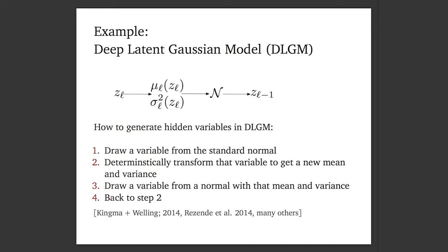What's an example of such a model? I'm going to describe a generative process to get a bunch of latent variables, and then show how to use that to model data. The generative process is almost completely given by the picture: first, draw a variable from a standard normal distribution. Then deterministically transform that variable to get a new mean and new variance. Then draw a variable from a normal with that mean and variance. You chain this L times.